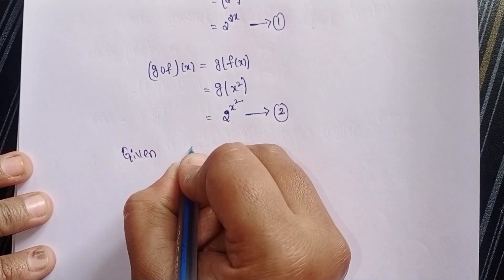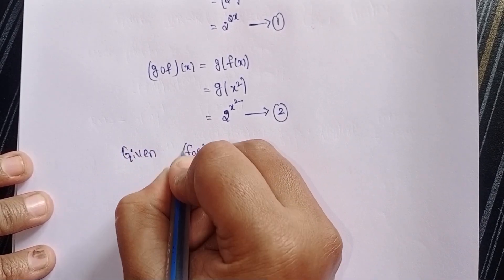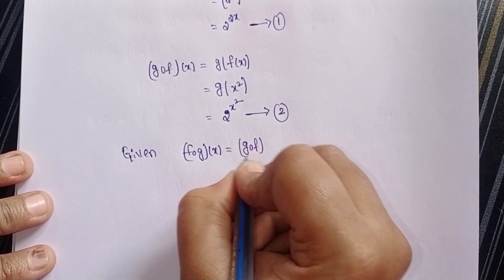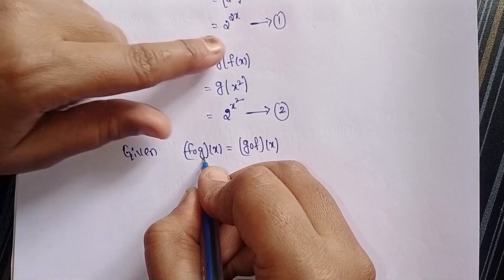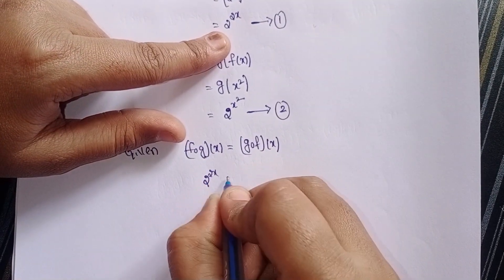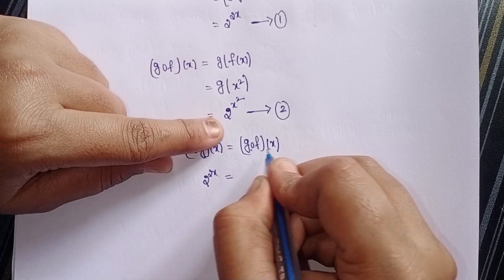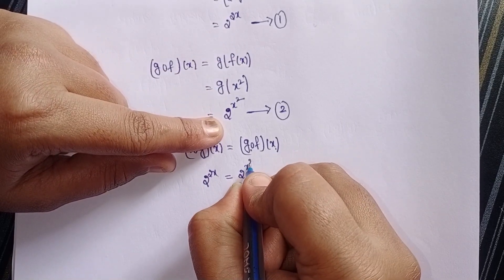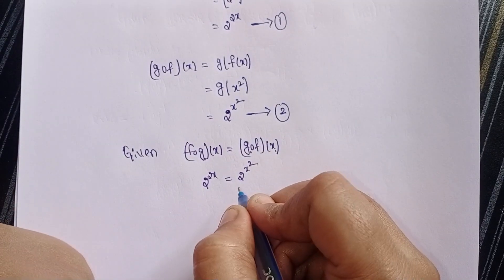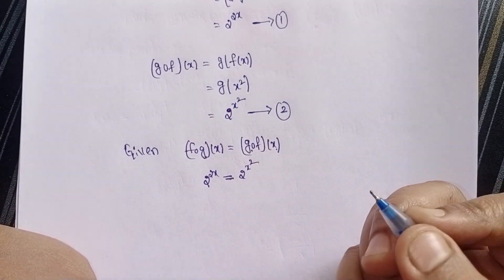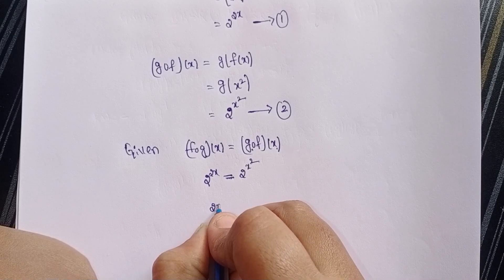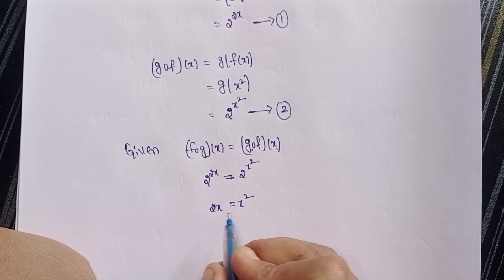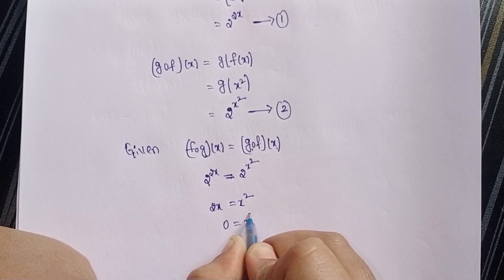Given: f circle g of x equals g circle f of x. So 2 power 2x equals 2 power x square. If the bases are equal, powers are also equal. Therefore 2x equals x square, which gives us x square minus 2x equals 0.